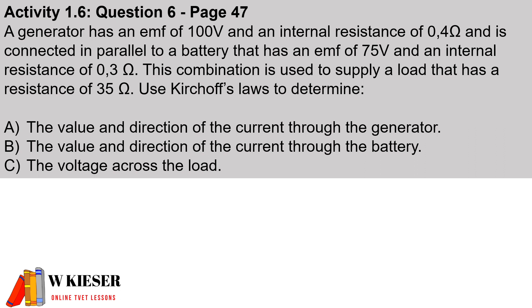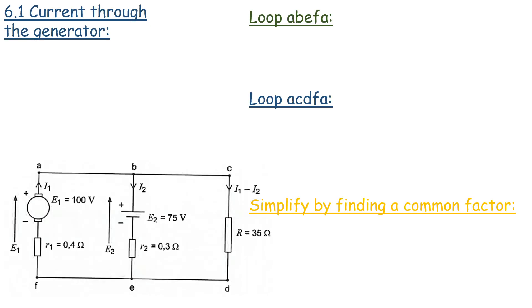For this calculation we're going to solve using Kirchhoff's law. It's an activity question: a generator has an EMF of 100 volts and internal resistance of 0.4 ohms, connected in parallel to a battery with an EMF of 75 volts and internal resistance of 0.3 ohms. This combination supplies a load with a resistance of 35 ohms. We must use Kirchhoff's law to determine the direction of current through the generator, the battery, and calculate the load voltage.